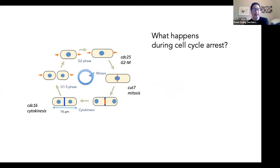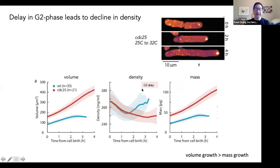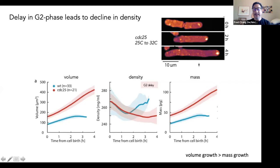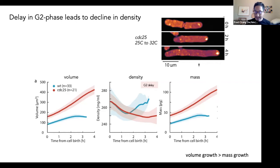Next, we wanted to see what happens to density when we arrest the cell cycle. In S. pombe, we have well-characterized temperature-sensitive mutants in the CDC genes which arrest cells at particular points. We arrested cells at G2 phase using the CDC25 mutant. In these mutants, the cells continue to grow but don't enter mitosis — they become very long. You can see that they get more and more purple, meaning they're losing density. The density gradually decreases as the cells are growing longer. This is a case showing that volume growth is faster than mass growth, so you're losing density.